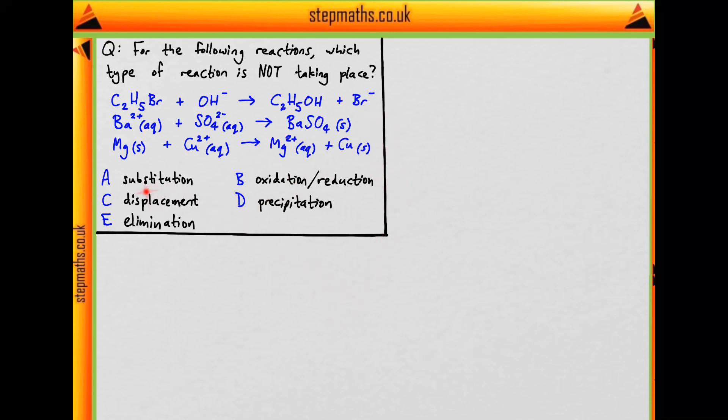So is there a substitution? So in the first one, we can see that the bromine is substituted by hydroxide. And this is a classic nucleophilic substitution where we have the hydroxide coming in and kicking out the bromide like so to form the alcohol. So a substitution we can confirm is definitely present.